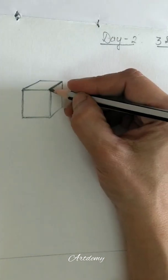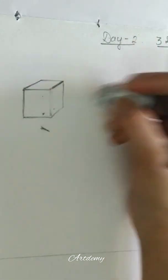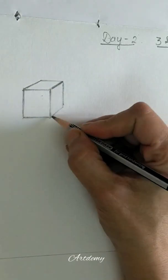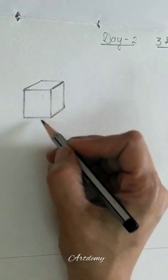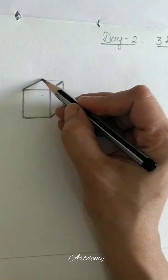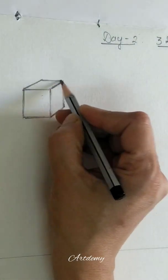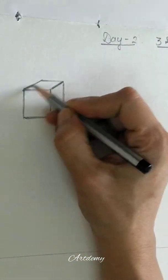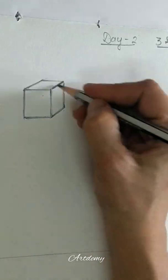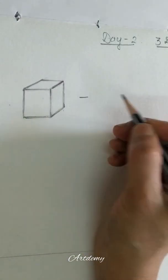So here's a very important thing which we have to remember: which line should be parallel to which line. These two lines should be parallel to each other, these two lines, these two lines, these two lines. So every opposite line should be parallel to each other and it will become a perfect cube.